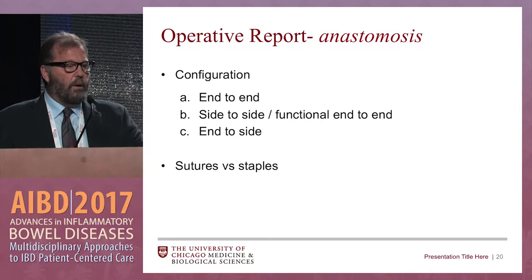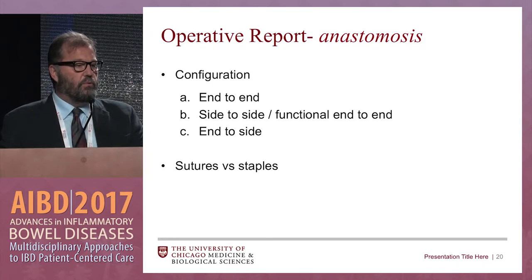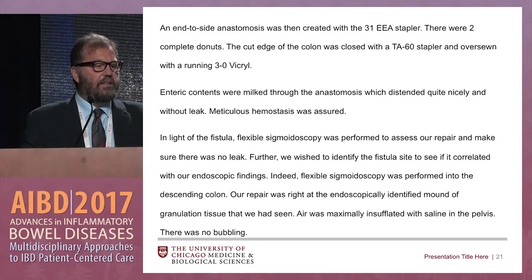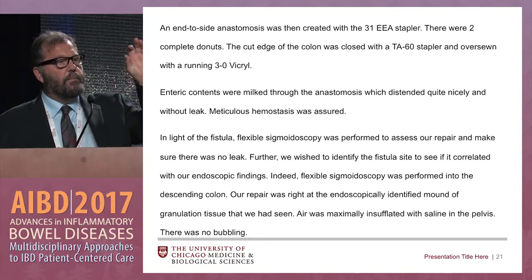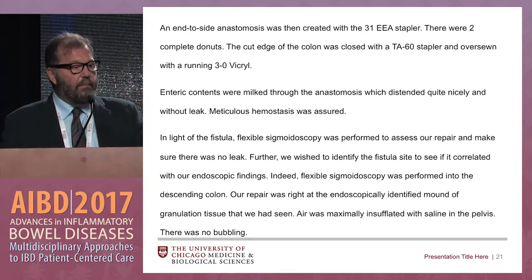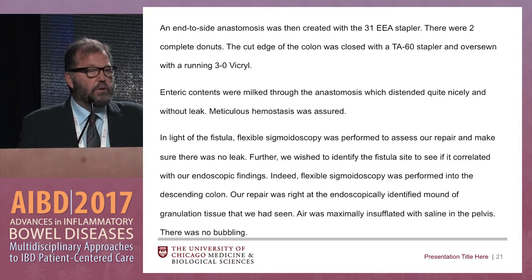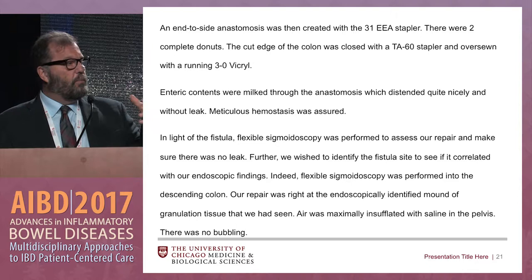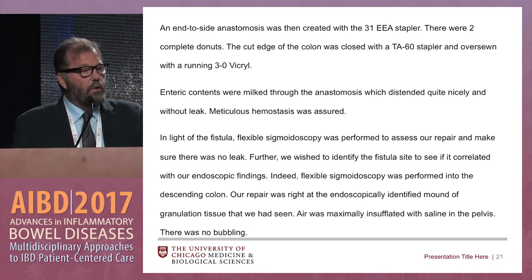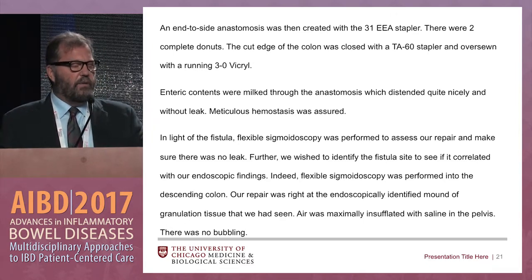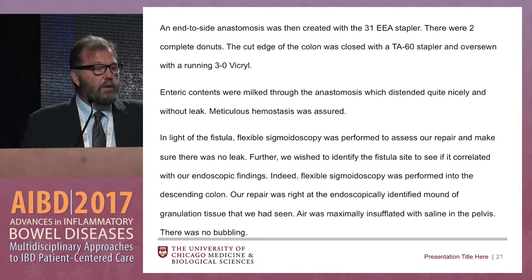All these other ways are perfectly legitimate. You should expect to see whether sutures or staples were used. Here I'm describing exactly how I did the anastomosis — the 31 EEA stapler, which is a big stapler for the small intestine. The 31 means it's about a 31-millimeter diameter anastomosis. With two complete donuts — the nature of that firing is that it staples the two ends together and cuts a ring — I'm indicating the donuts were complete, meaning the anastomotic device fired correctly.